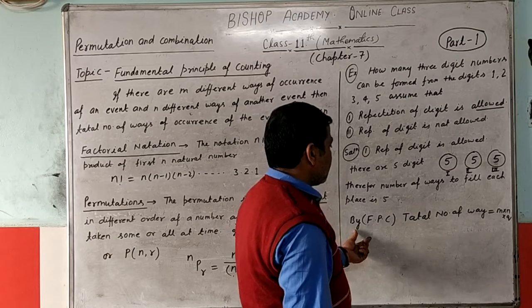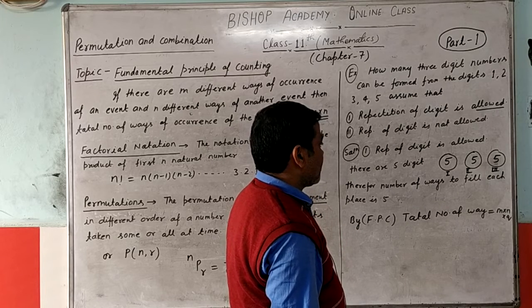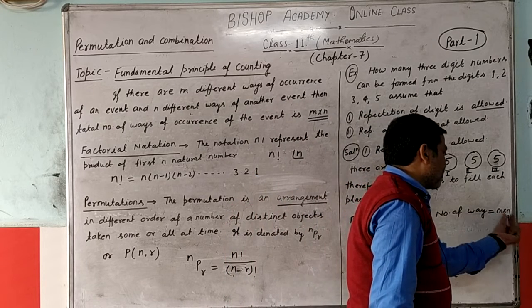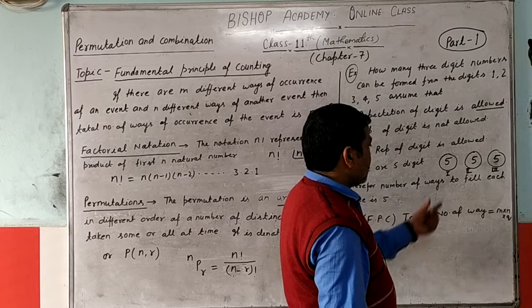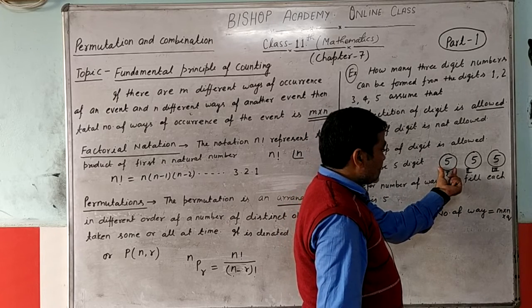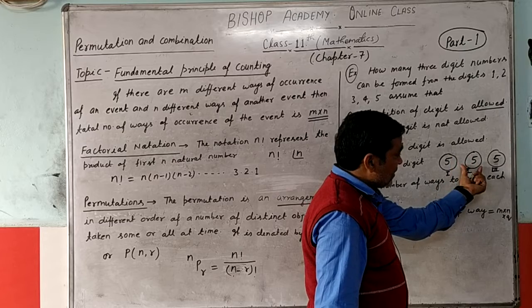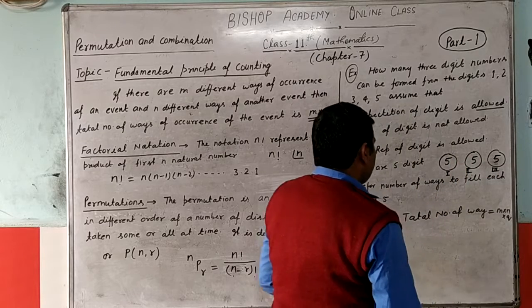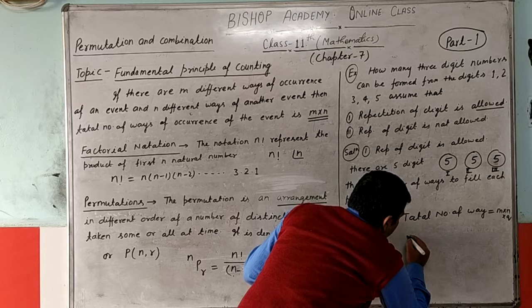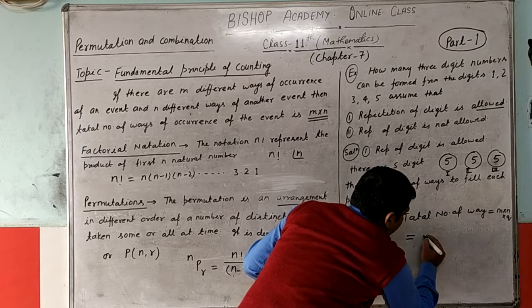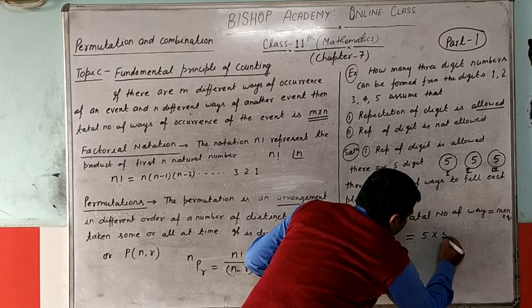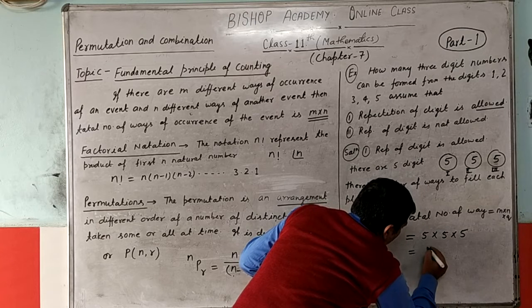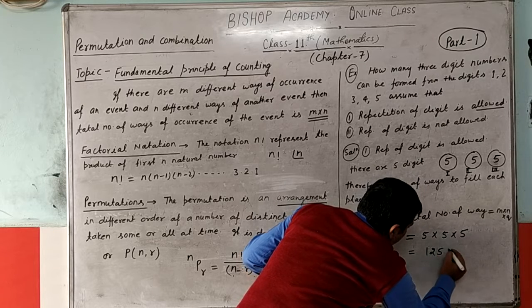By the fundamental principle of counting, total number of ways is equal to M multiplied by N multiplied by Q — that is, first place times second place times third place — which gives 5 multiply 5 multiply 5, equal to 125 ways.